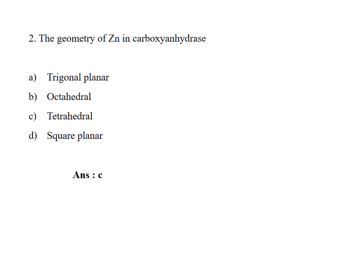The geometry of zinc in carboxyanhydrase: Option A, Trigonal planar; B, Octahedral; C, Tetrahedral; D, Square planar. Option C, Tetrahedral.